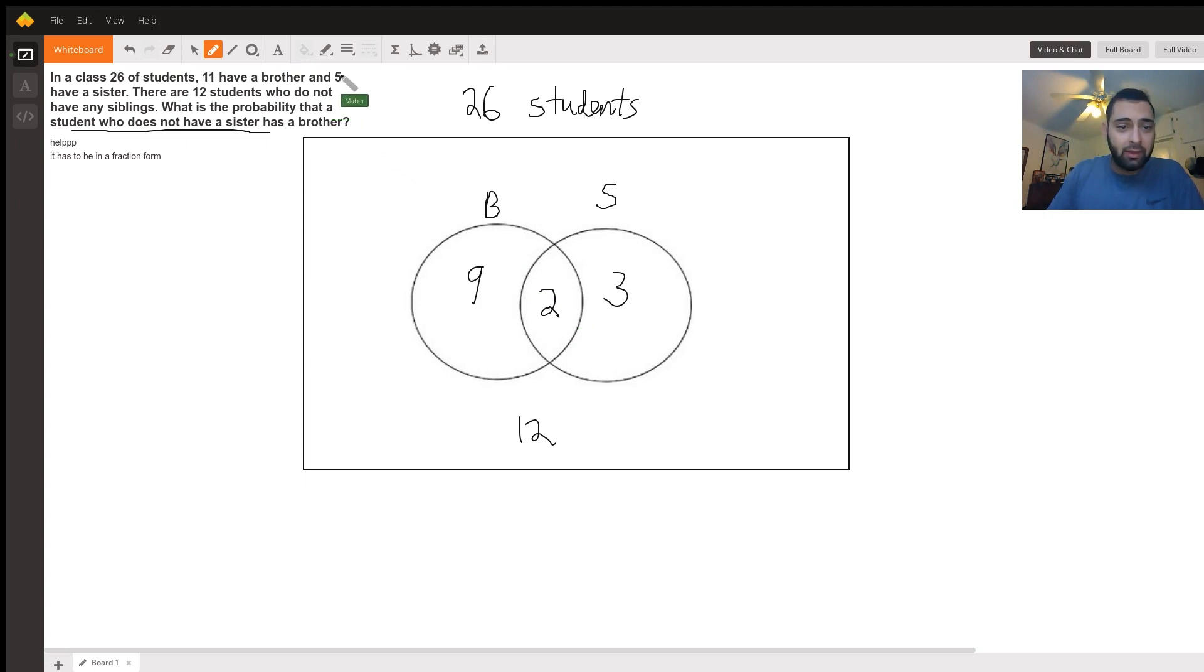Well, if 5 have a sister, that means there are 21 total students without a sister. So 21 would be the denominator. And how many of those 21 have a brother? So the 21 in question is this 9 plus that 12. Everyone else has a sister.